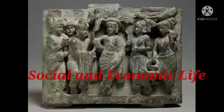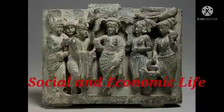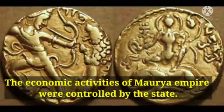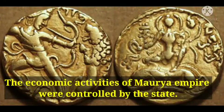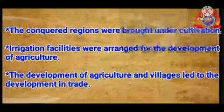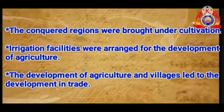First, let us discuss the economic activities of the Maurya Empire. The economic activities were controlled by the state. The conquered regions were brought under cultivation, and irrigation facilities were arranged for the development of agriculture. The development of agriculture and villages led to the development of trade.